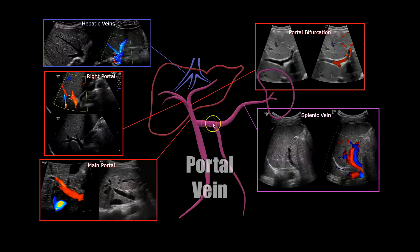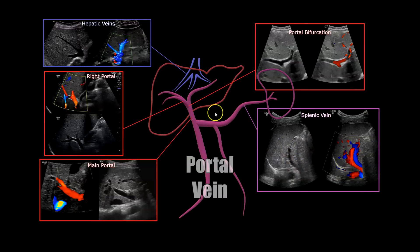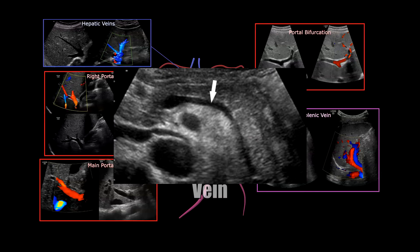The splenic vein would be right here at the splenic hilum. You can see the vein, and that's color Doppler showing the vein and artery. You can also get the splenic vein near the pancreas — the pancreas tail ends at the splenic hilum, and you can Doppler the splenic vein there as it becomes the portal vein at the portal-splenic confluence.